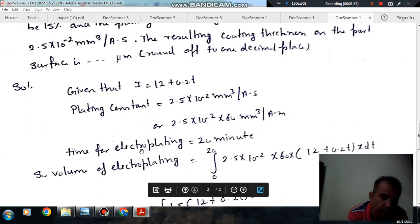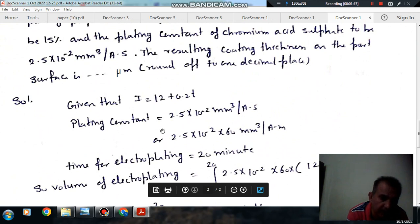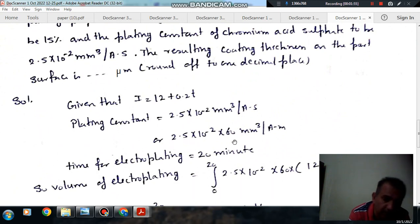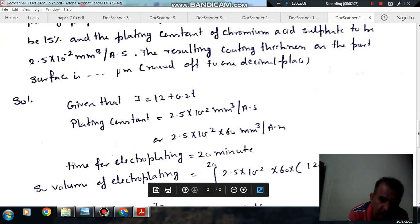So now if we consider the ideal process, the volume of electroplating in time of 20 minutes, in small time dt will be, because its unit is mm cubed per ampere per minute, it will be multiplied by time as well as current. And current is 12 plus 0.2t. So in small time dt that much volume of electroplating is there for the plating constant.